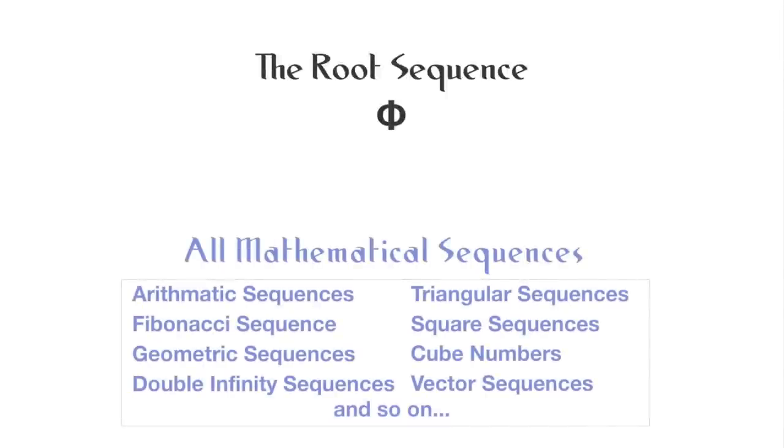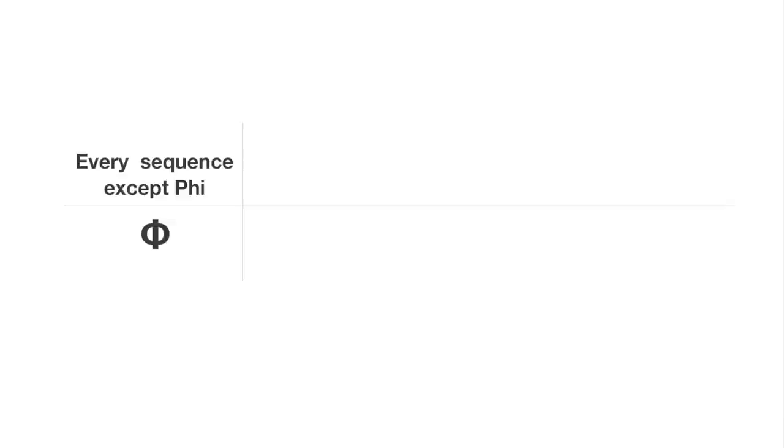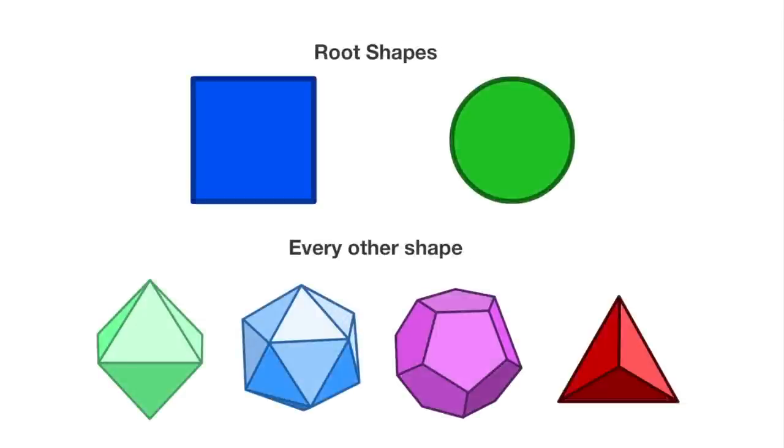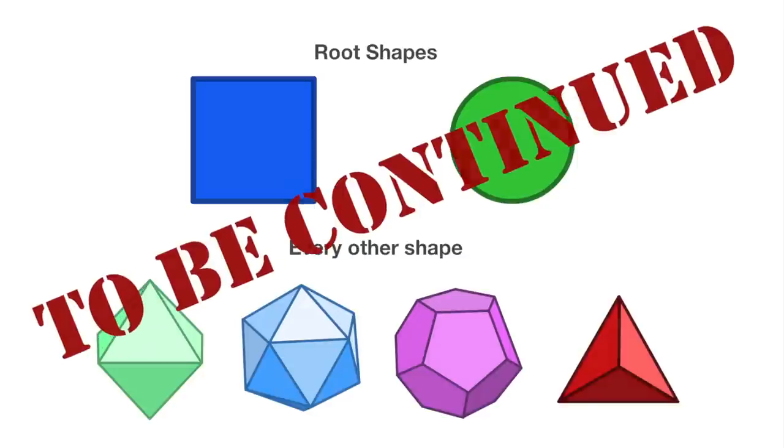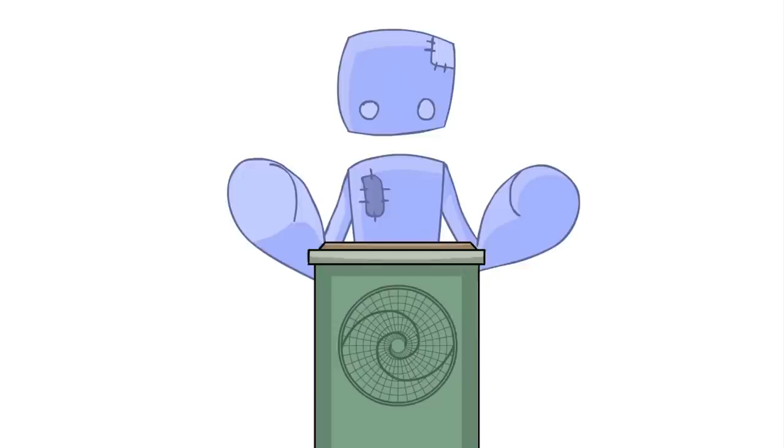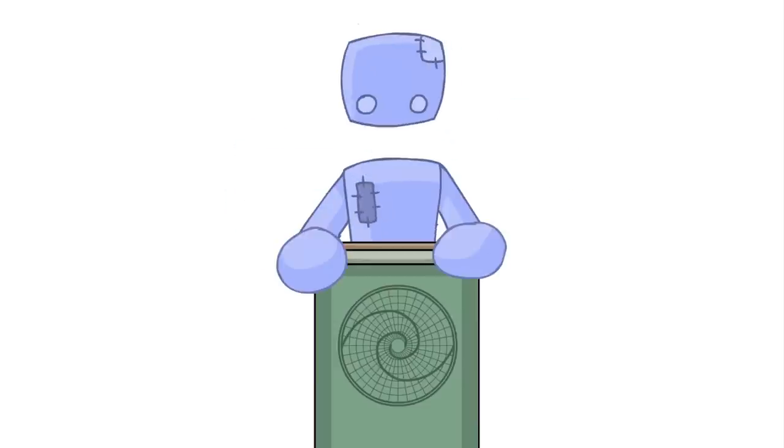It is also believed that phi is the mathematical root of all other sequences. See, every mathematical sequence in existence needs a minimum of three numbers to figure out the sequence. Phi only needs two. It is the only one. Similar to how the circle and square are the source of all shape, but we'll get to that later on. The next thing that you need to know is that this ratio is found in all life everywhere. Sort of. By sort of, I mean it's really Fibonacci, but we'll look at that in a moment.